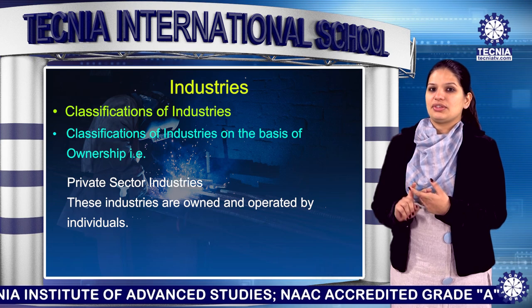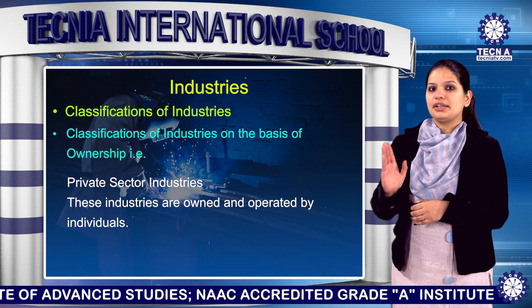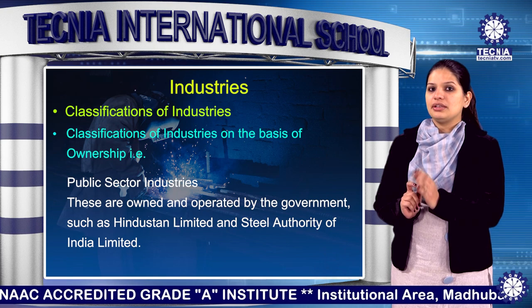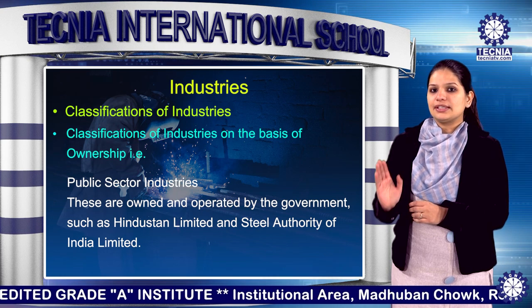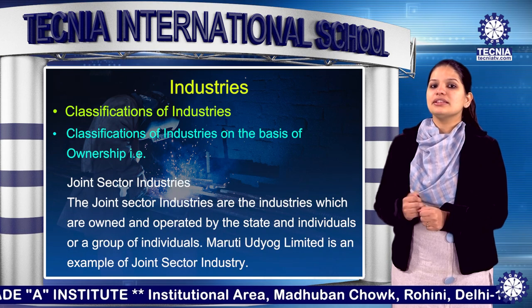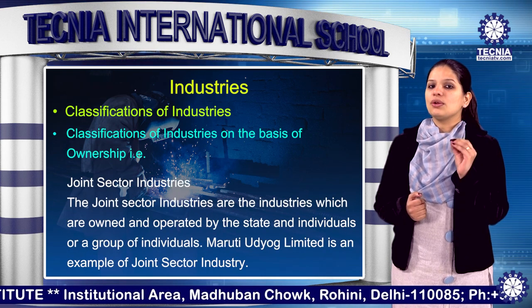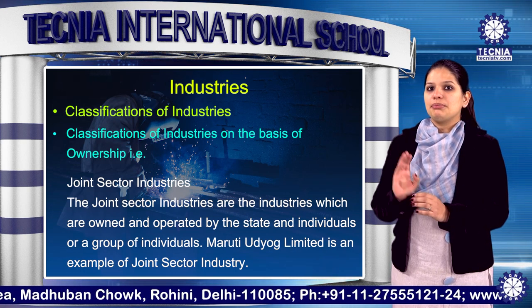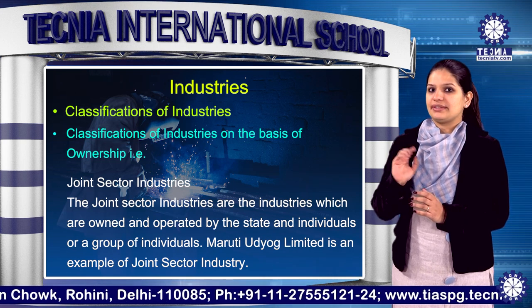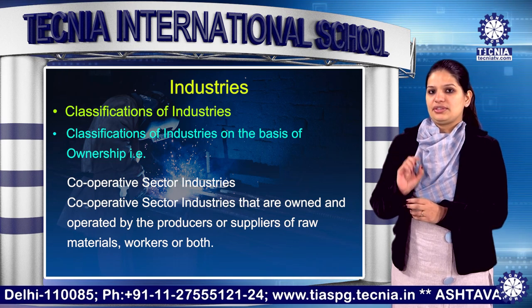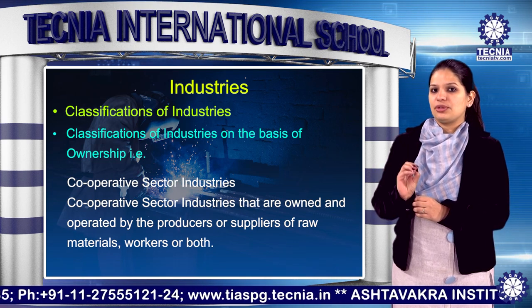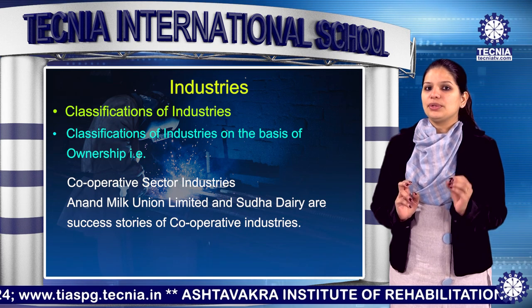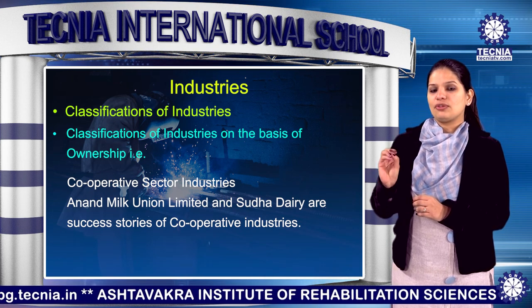Private sector industries are owned and operated by individuals or a group of individuals. Public sector industries are owned and operated by the government, such as Hindustan Limited and Steel Authority of India Limited. Joint sector industries are owned and operated by the state and individuals or a group of individuals; Maruti Udyog Limited is an example. Cooperative sector industries are owned and operated by producers or suppliers of raw materials, workers, or both. Anand Milk Union Limited and Sudha Dairy are success stories of cooperative industries.